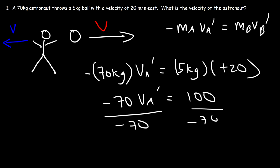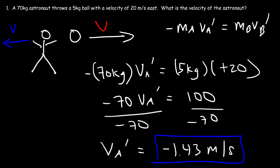Dividing both sides by negative 70, the final velocity of the astronaut is negative 1.43 meters per second. The answer is negative because he's moving in the negative x direction — that is, west. Notice the velocity of the ball is significantly greater than the velocity of the astronaut.